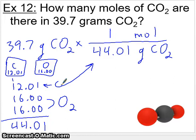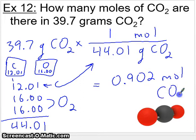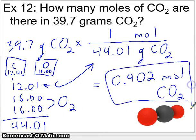So now we can divide, you'll divide 39.7 by 44.01, go ahead and do this on your calculator, and make sure you get 0.902 moles of CO2 to be precise. So we have 0.902 moles of CO2 in 39.7 grams.